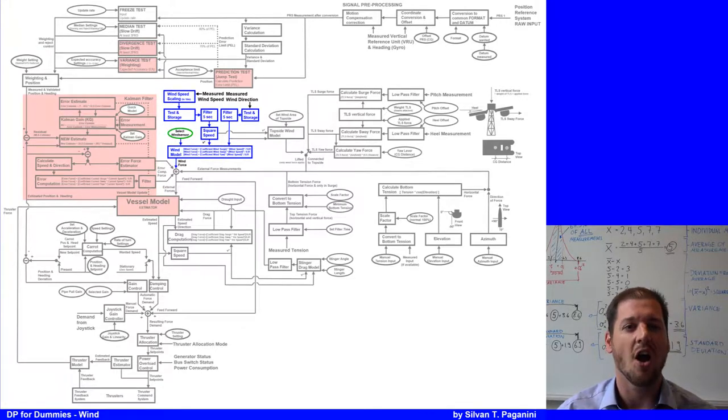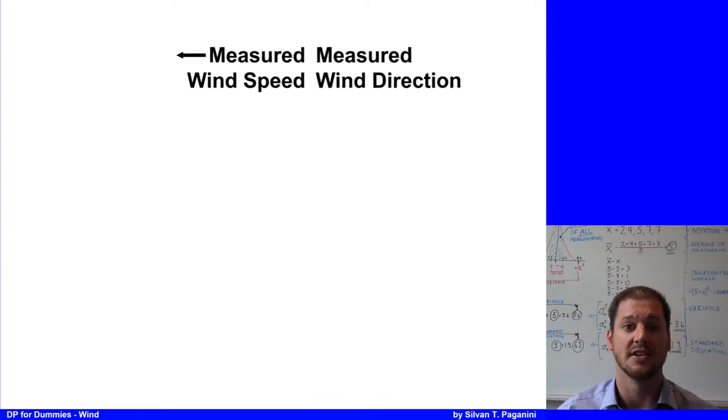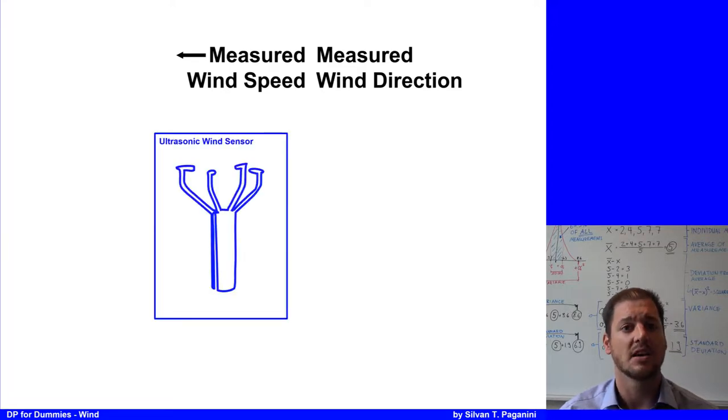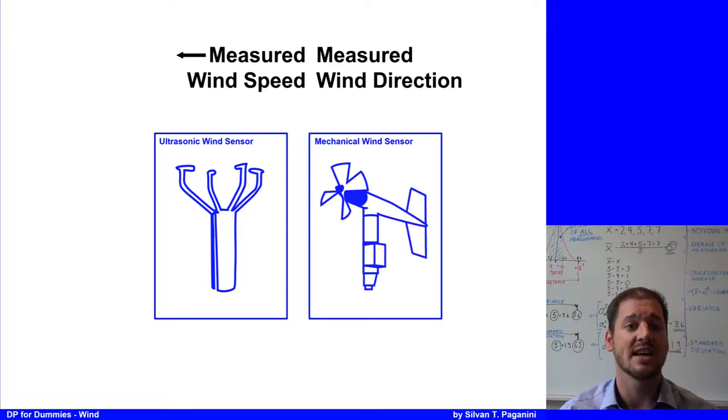The wind is the only environmental force which is measured with the help of a wind sensor. For the measurement of the wind speed and wind direction, we can divide the wind sensors into two types: the static one based on ultrasonic principle and the mechanical cup and vane type sensor.